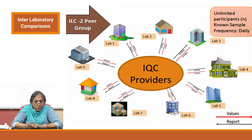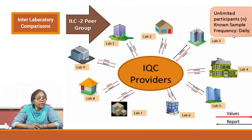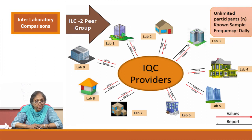The second type is the peer group. Again, there can be unlimited participants, but the sample is a known sample — that is the difference. Frequency is daily: you analyze the sample daily, find the mean, and the values are fed to the QC provider. At the end of the month, they give you a report on your analytical performance.